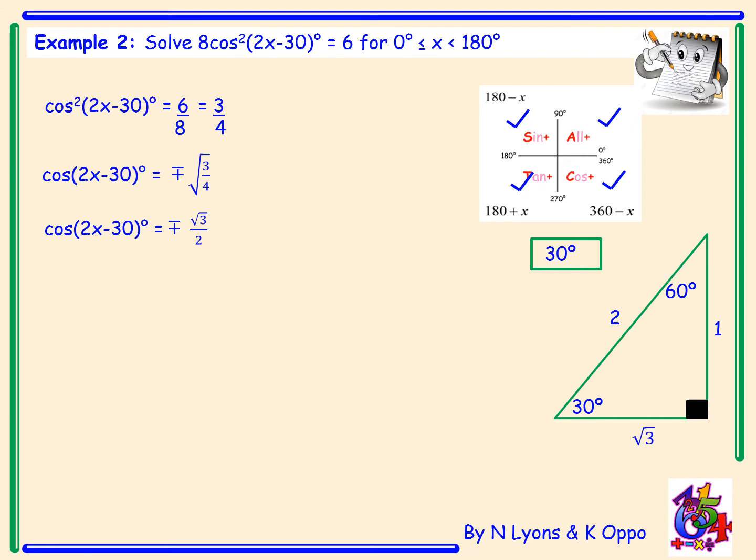From there we obtain our four angles in each quadrant: 30 degrees, 180 minus 30 gives 150, 180 plus 30 gives 210, and 360 minus 30 gives 330 degrees.